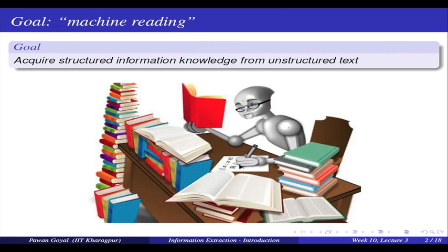How do I find out relations between any two entities by using the text corpus on the web? What do I mean by information extraction? We can say that the goal of information extraction is like machine reading. You have a lot of text available on the web, all in unstructured form - there is no particular structure to that. From that text, can I obtain some structured knowledge that can be used for various different applications and tasks?